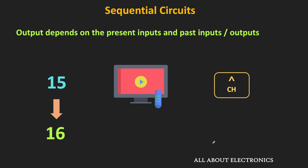Comparing this analogy with sequential circuits: the channel-up button is our input, because without pressing it we cannot see the next channel. But what the next channel will be depends on the present channel — if it is 15 the next will be 16, or if it is 8 the next will be 9. So the next channel number depends not only on the present input but also on the current channel being watched. Therefore, we also need to store the present channel in memory.